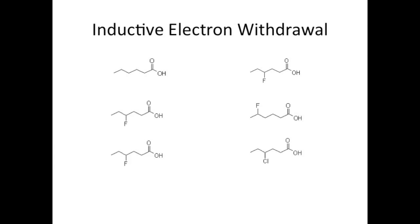The type of halogen matters. The more electronegative the element, the more of a pull it has. So, the fluoride acid will be more acidic than the chloride. A chloride would be more acidic than a bromide.